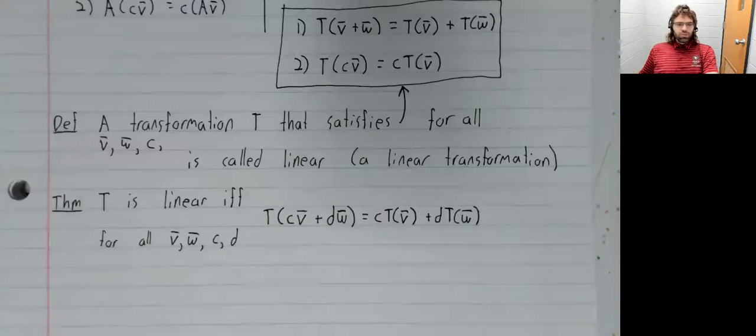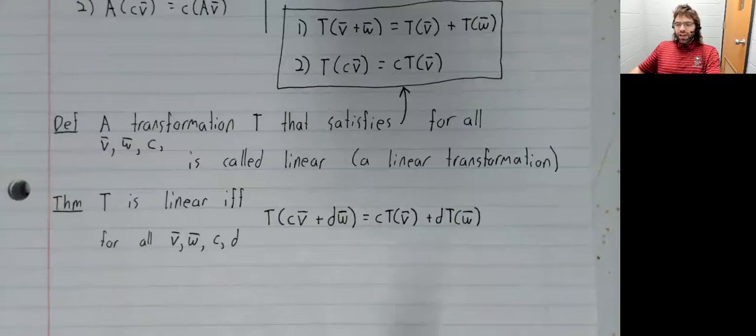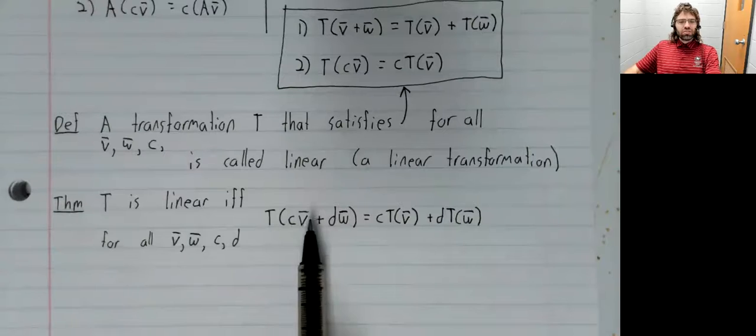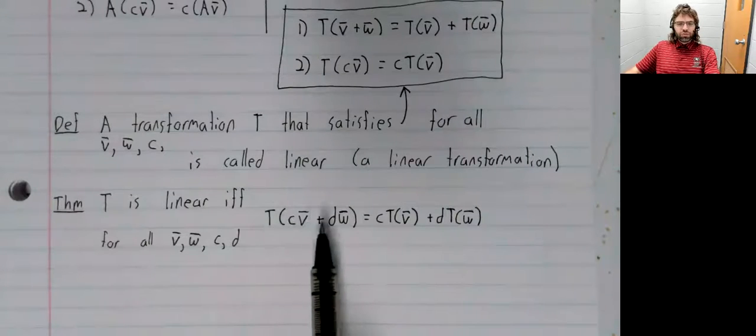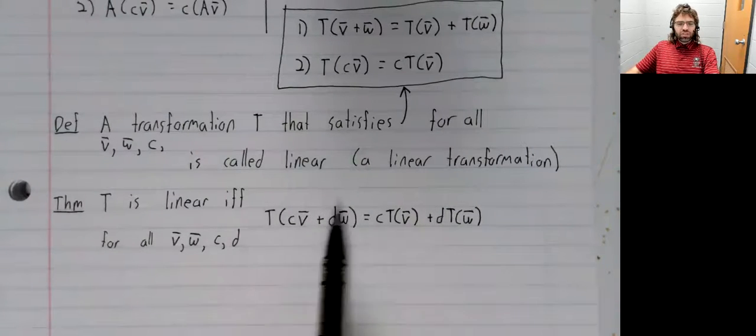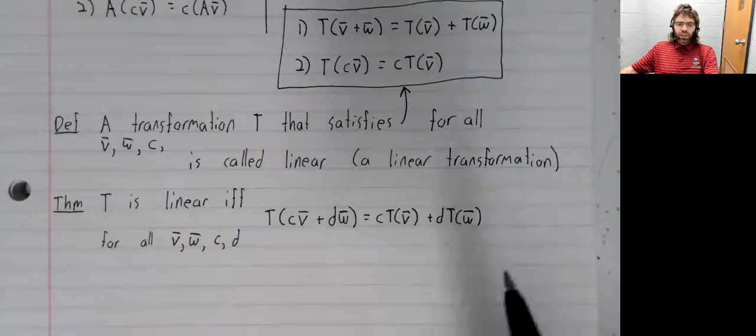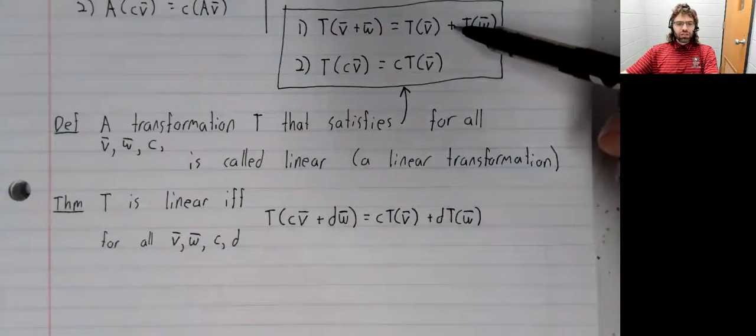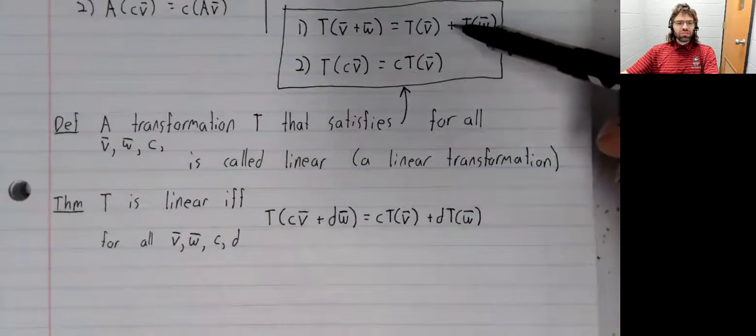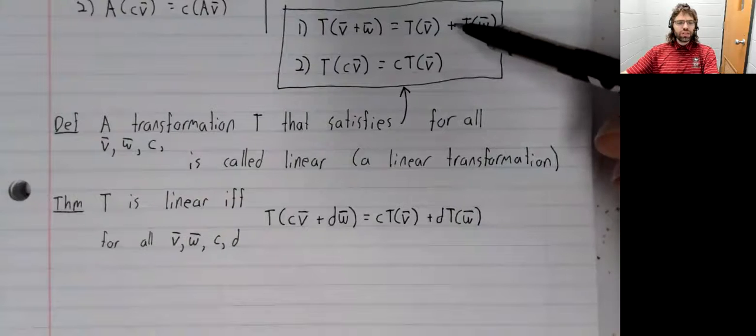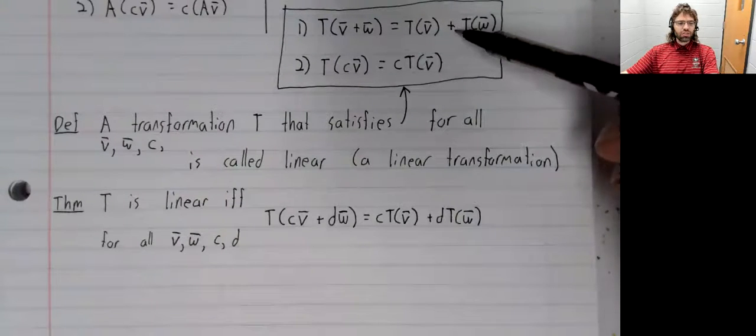So sometimes if you're trying to demonstrate that a transformation is linear, it's faster to use this theorem because you can just use a single condition instead of having to check whether it satisfies two different conditions.